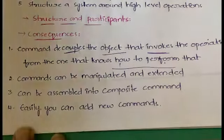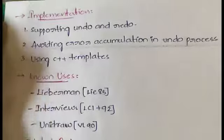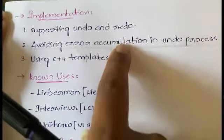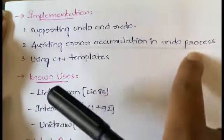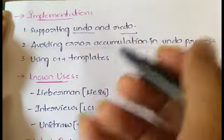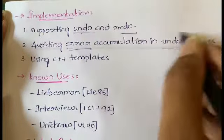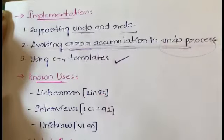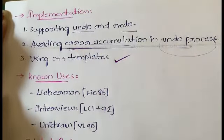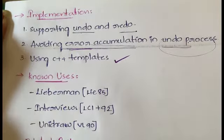For implementation: the first consideration is supporting undo and redo. You have to design it in such a way that it supports undo and redo operations. You should also avoid error accumulation in the undo process — whenever you're doing the undo process, make sure there are no errors. You can also use the C++ template concept in implementation.